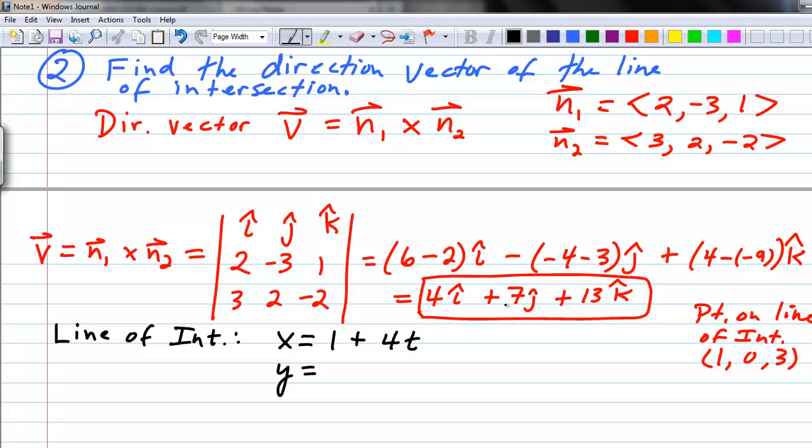Y equals 0, which I don't need to write, plus 7t, or just 7t. And z equals 3 plus 13t. 13 coming from our direction vector, the k component, in the z direction. So this is our parametric set of equations for our line of intersection.